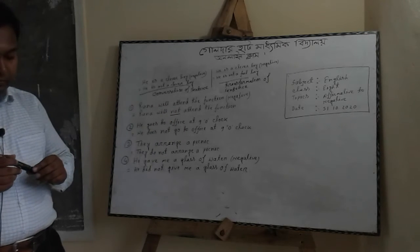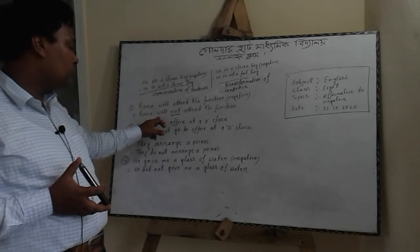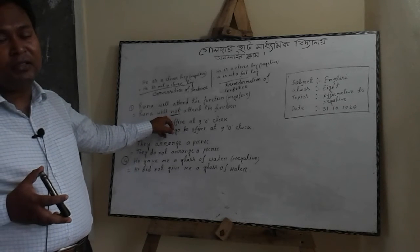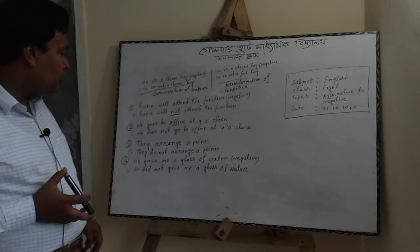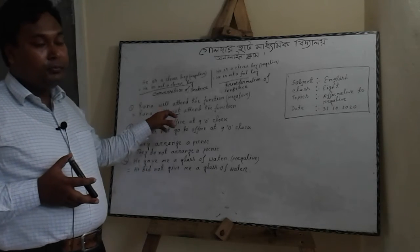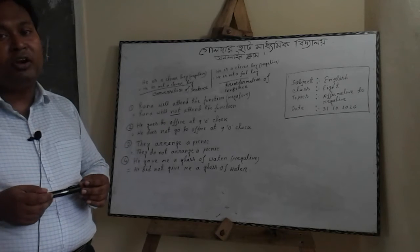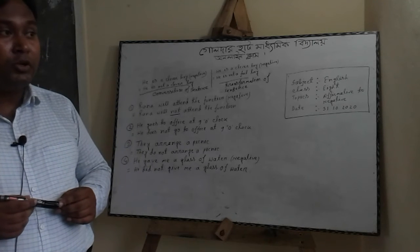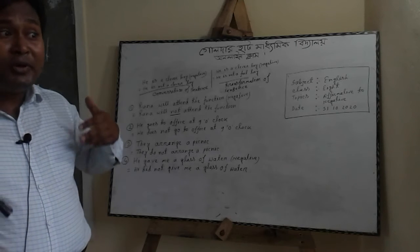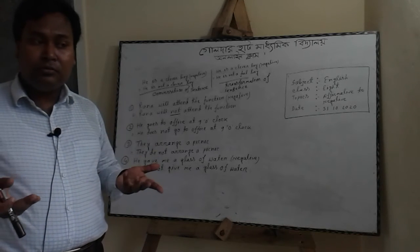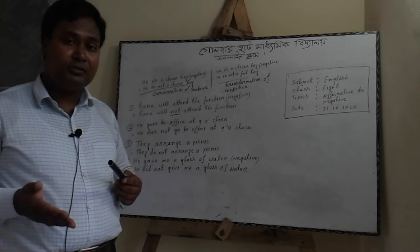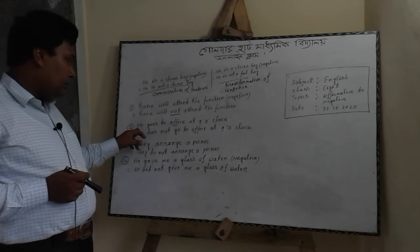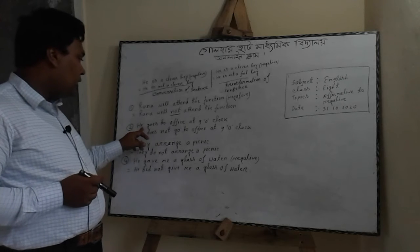Here you see I use 'not' after the auxiliary verb 'will.' I hope you know what the auxiliary verbs are — they are: am, is, are, was, were, have, has, had, shall, will. So if any sentence has an auxiliary verb, you can change it into negative by using 'not' after that auxiliary verb.